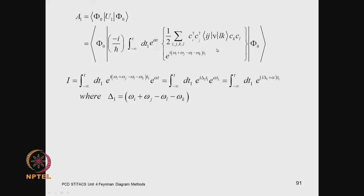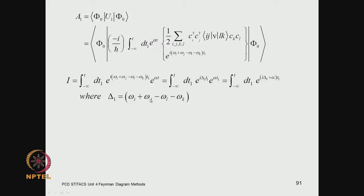The space integrals and time integrals can be separated. Factoring out the time-dependent functions — e^(i*(omega_i + omega_j - omega_l - omega_k)*t1) times e^(alpha*t1) — I write the sum and difference of these four omegas as delta_1 for brevity. The time integral is then just the integral from minus infinity to t of e^(i*delta_1 + alpha)*t1, which is a very simple integration. Evaluating the definite integral from minus infinity to t gives a simple result.